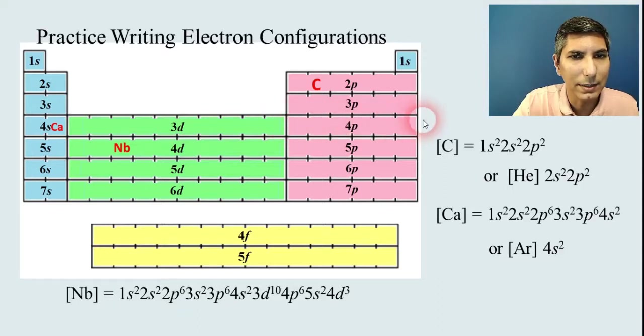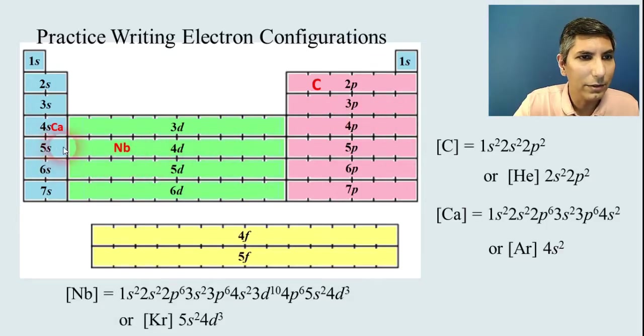4s², just keep going in order of these little sections here. 3d has 10 boxes, 3d¹⁰, and then 4p⁶ and back around 5s², and then in the 4d section, niobium is the third box, so it's 4d³. So you can write it like that, or if you want to abbreviate it, that would be krypton and then 5s² 4d³.